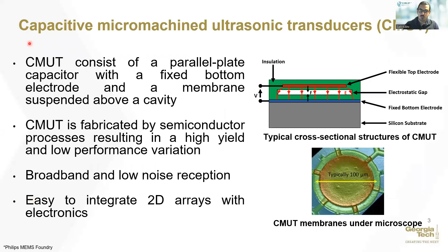To overcome these difficulties, we are working on a new CIMAT array design. To explain CIMAT technology briefly, it has vibrating membranes including conductive electrodes. Due to their dimensions, they are fabricated in standard semiconductor processing. As you can see in the figure bottom, depending on operating frequency, they have hundreds of micrometer diameter membranes and micrometer-level electrostatic gap sizes. One of the biggest advantages of this technology is that they can be operated broadband frequency with a low noise reception feature. Moreover, easy integration with electronics makes CIMATs more functional.